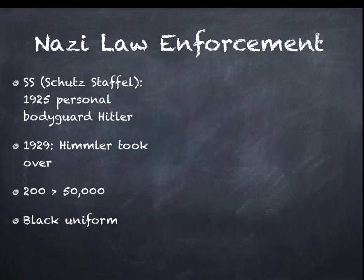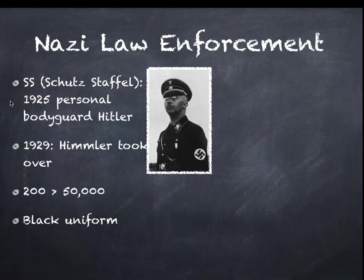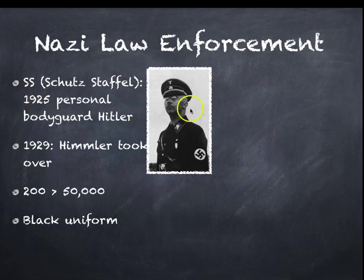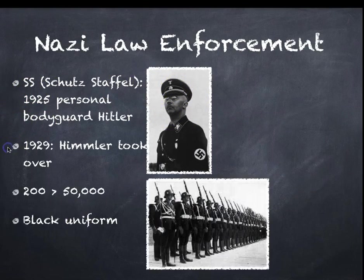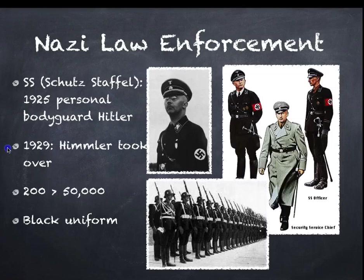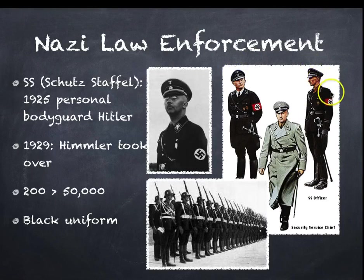Methods of law enforcement. The infamous SS — Schutzstaffel, meaning bodyguard — were the personal bodyguard of Hitler from 1925. Heinrich Himmler, a sinister ex-chicken farmer, took over in 1929. Their numbers grew rapidly during that time. Members of the SS wore the infamous black uniform with the death's head insignia for the death's head battalions that ran the death camps.